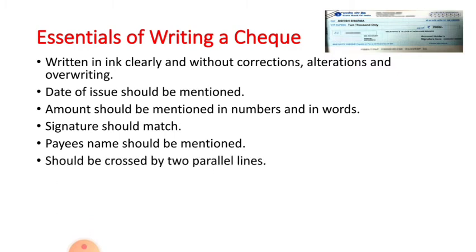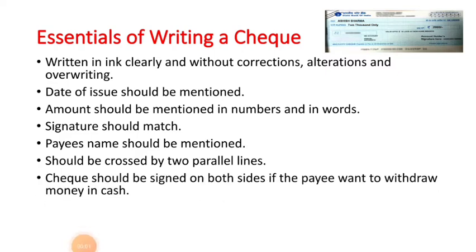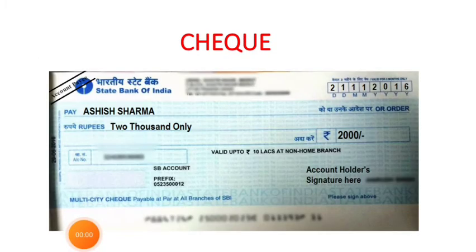Payee name should be mentioned on the check to whom you intend to make the payment. A check should be preferred by drawing two parallel lines on the left hand side of the top corner as it protects the drawer against any loss, theft or forgery and ensures that the amount will go directly into the payee's account. A check should be signed on both sides if the payee wants to withdraw money in cash or pays a bearer check.